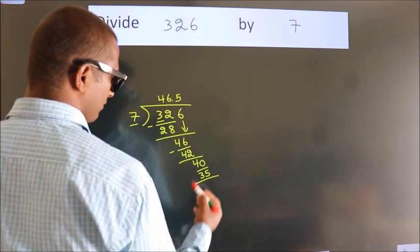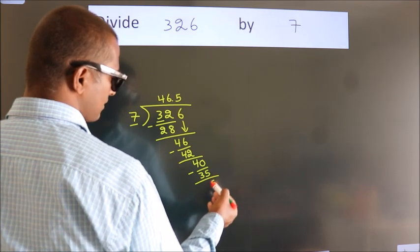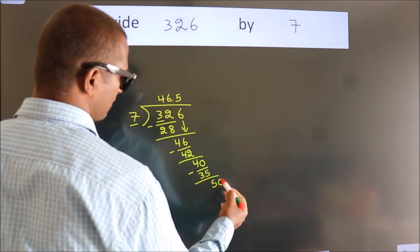Now we subtract. We get 5. After this, we already have the decimal. So directly take 0.